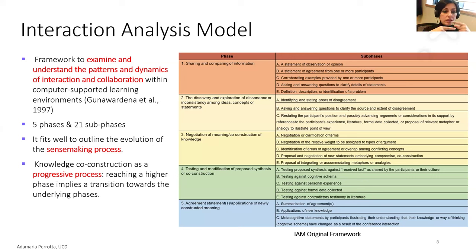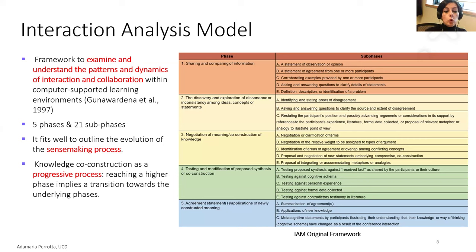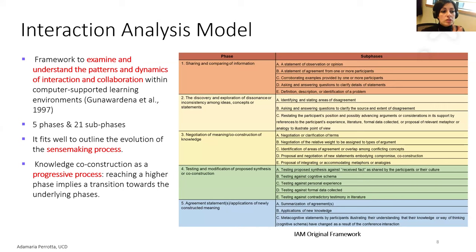In this framework, knowledge is considered a progressive process happening through discussion, with five stages. Students should start with phase one, where they share and compare information. While discussing a solution, they discover a dissonance or inconsistency between their ideas, start to negotiate meaning and propose solutions, and co-construct their knowledge. Then they test the proposed solution and wrap up on a final agreement of meaning. I chose this framework because it perfectly marries the definition of sense-making.